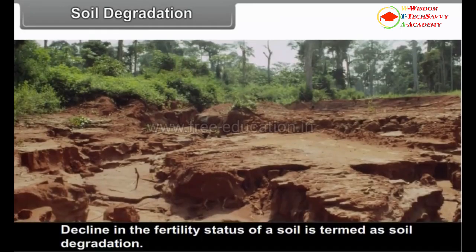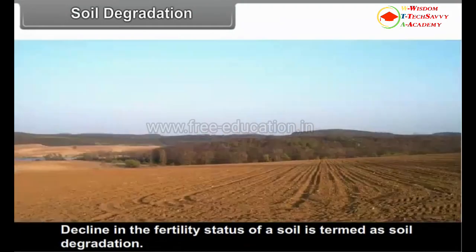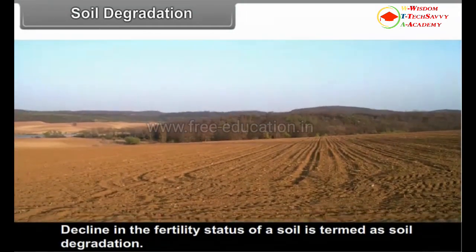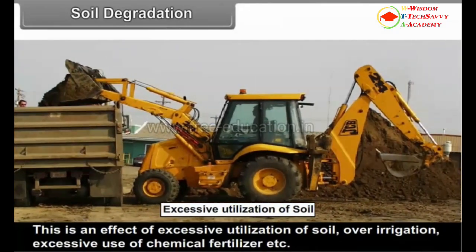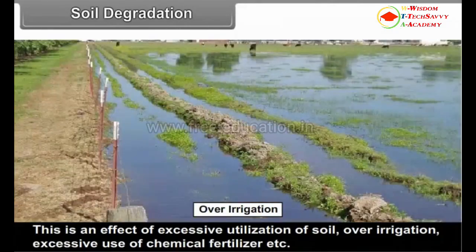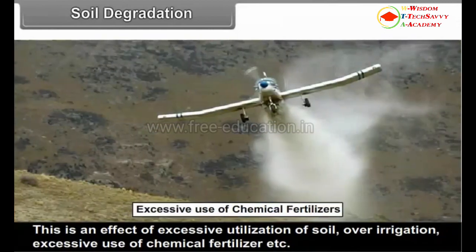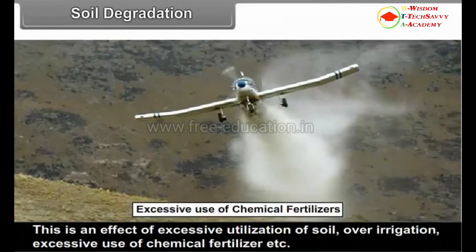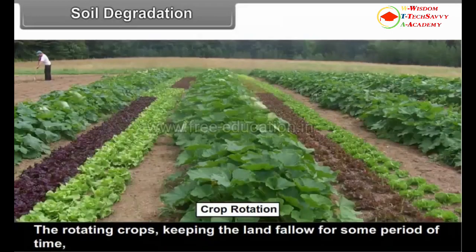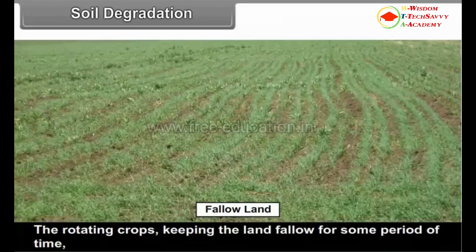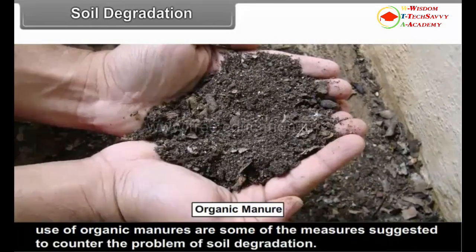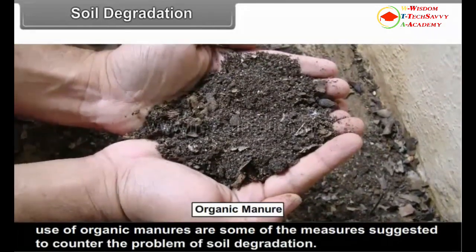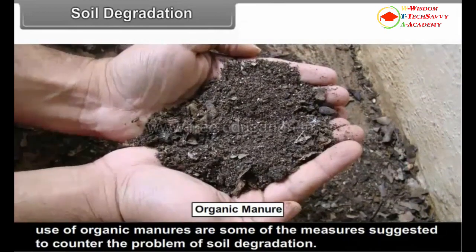Soil Degradation. A decline in the fertility status of a soil is termed as soil degradation. This is an effect of excessive utilization of soils, over-irrigation, and excessive use of chemicals and fertilizers. Rotating crops, keeping the land fallow for some period of time, and use of organic manures are some of the measures suggested to counter the problem of soil degradation.